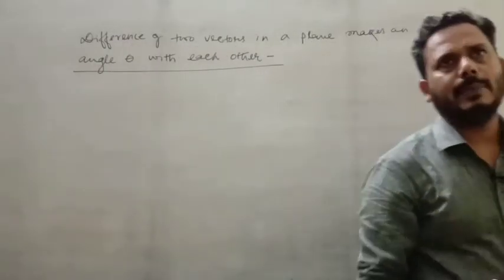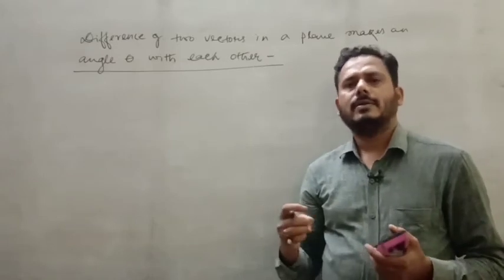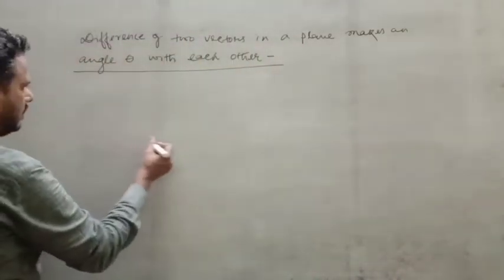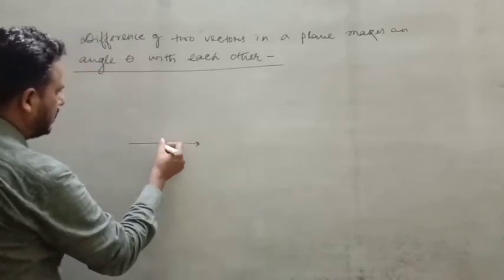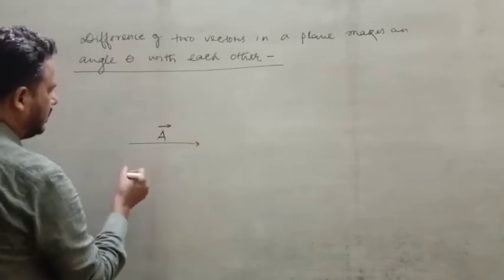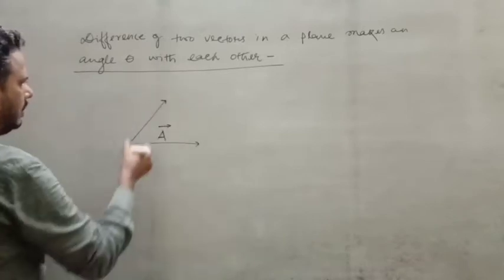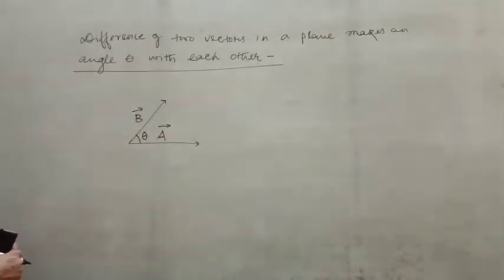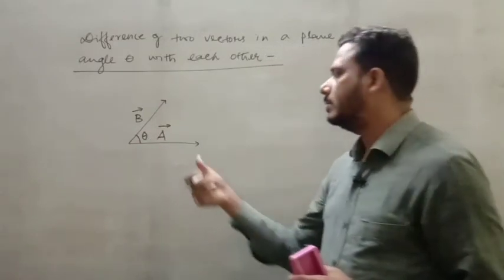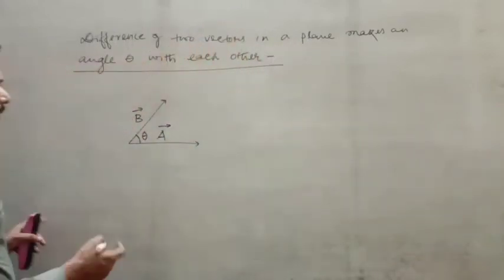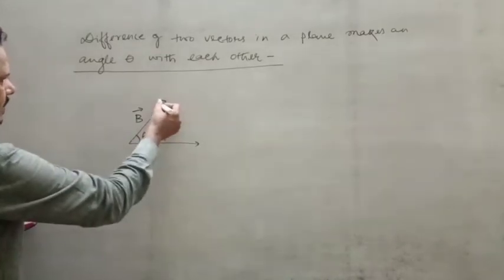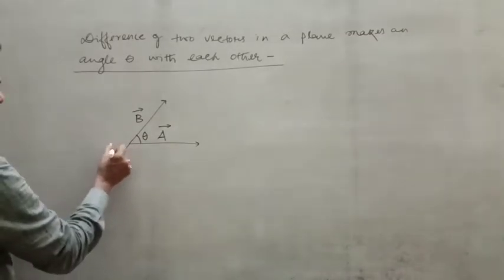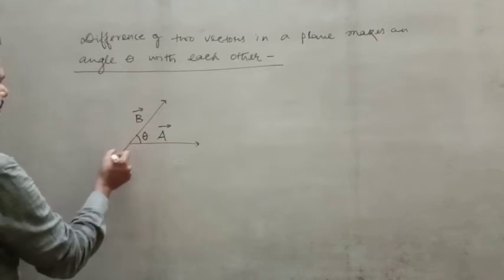We will use the same method just like the sum of two vectors. You suppose one vector a and another vector b. If they make an angle theta to each other, we don't add them — we subtract. For subtraction, you take vector b in its opposite direction, so a negative sign will be there.